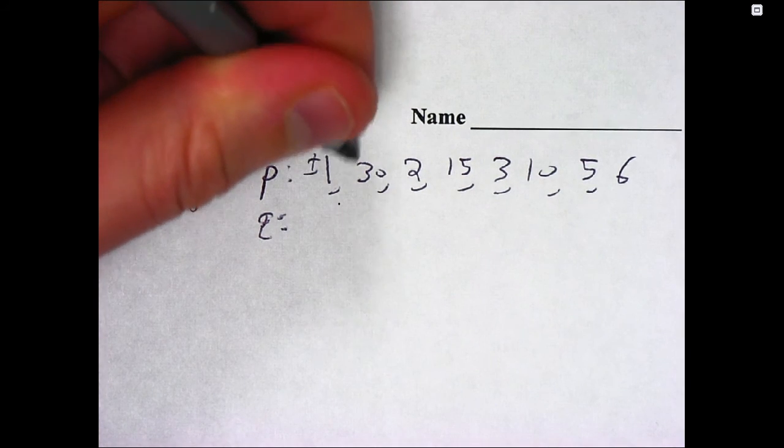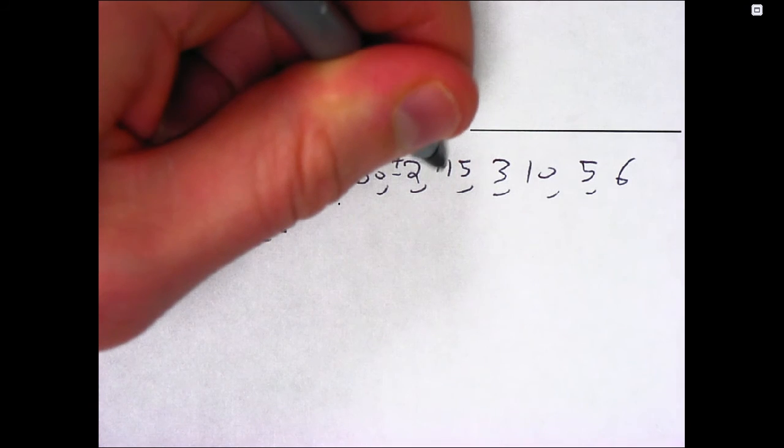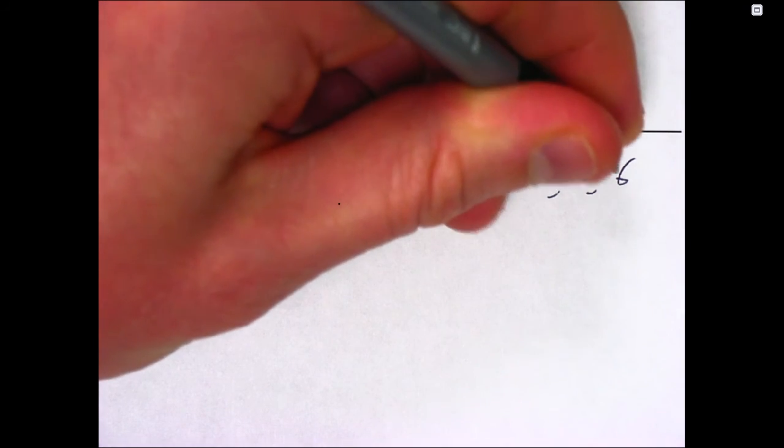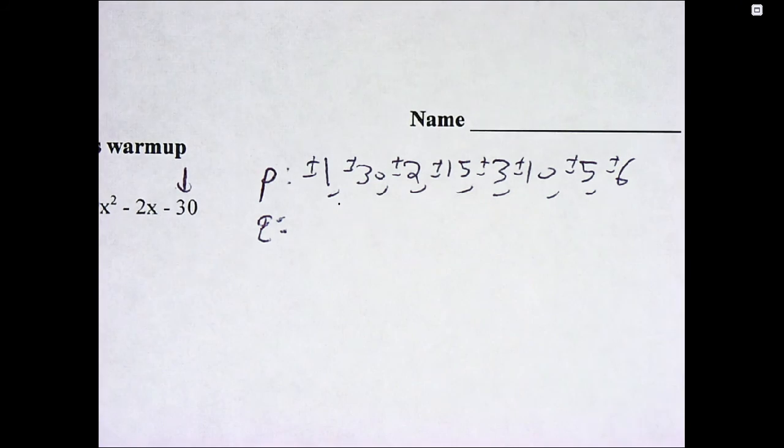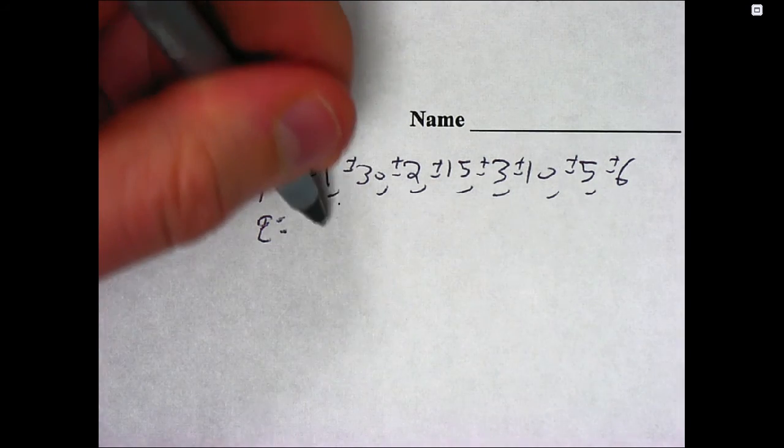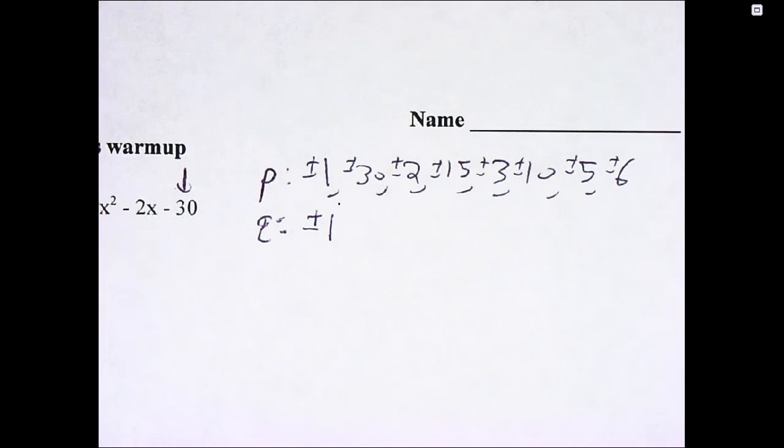And then all of these can be positive or negative. So I'll sneak in that positive or negative in front of all of them. And then Q is going to be the factors of the lead coefficient. And so in this case, Q thankfully is just 1, so we just have plus or minus 1.